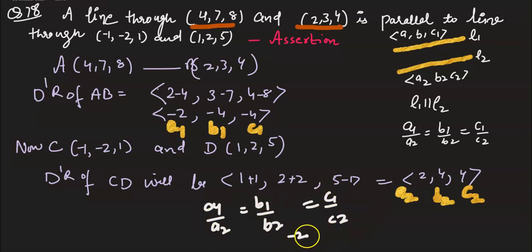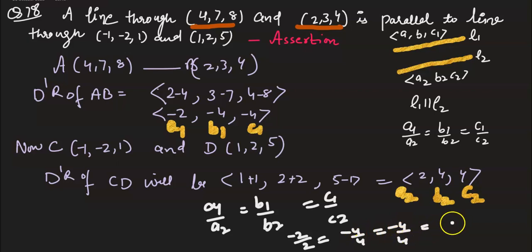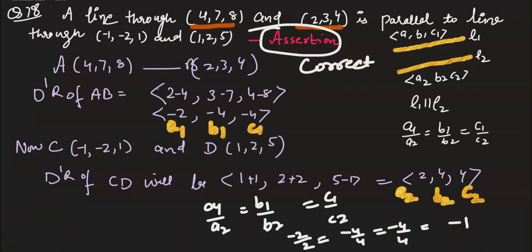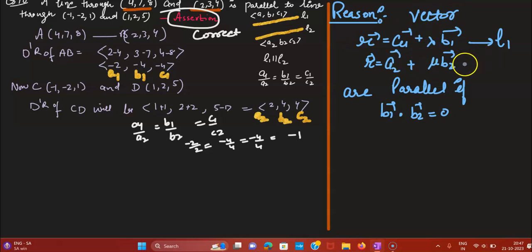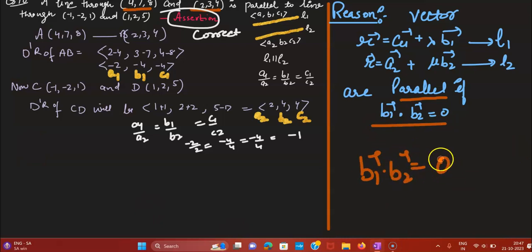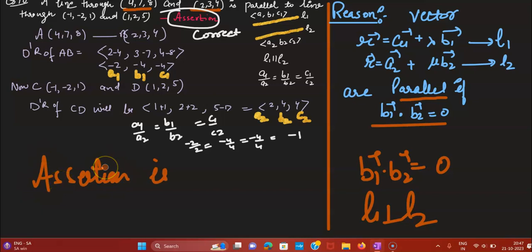Since the ratios are the same, the assertion is correct. However, the reason given is that R = A1 + λB1 is the general equation of line 1 (vector form) and a similar equation for line 2. For parallel lines, the dot product being zero is incorrect — dot product is zero when lines are perpendicular, not parallel. So the assertion is true and the reason is false.